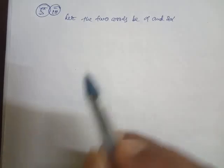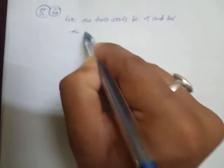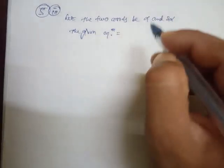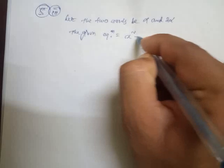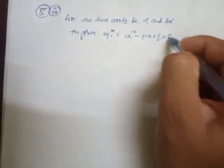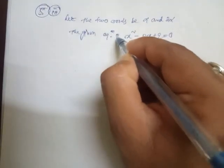Now look student, the given equation is x squared minus px plus q equal to 0. This is the given equation.